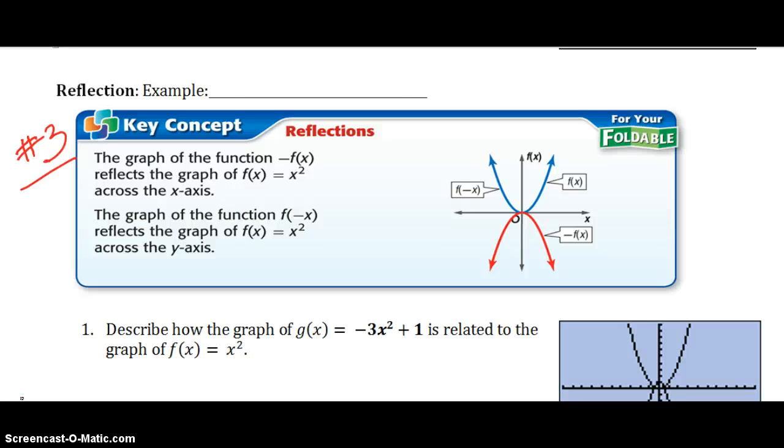Transformation. Another way that we can transform a quadratic equation is by reflecting it. And that's like a mirror, a mirror image. We've already talked about if our a value is negative, then it is going to tell us that the parabola opens down. So again, the graph of the function negative f of x reflects the graph. So it's going to reflect the parent graph across the x-axis. Now this is the main one we're going to deal with. But know that if the x is negative, then it translates across the y-axis. But that's not our normal scenario.